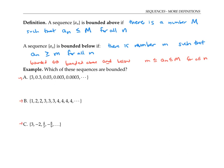The first sequence is bounded above by three, since all of its terms are less than or equal to three. Of course, we could have also used four or 100 as an upper bound, but three is the tightest upper bound we can use. It's also bounded below by zero, since all of the terms are positive. So we say that the sequence is bounded.